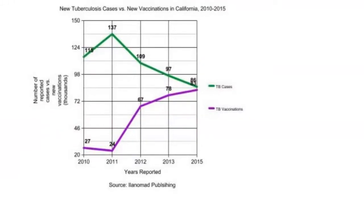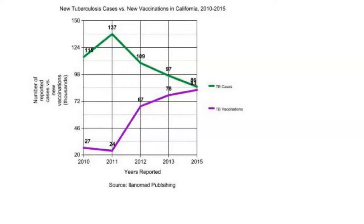One of the things I want to focus on now is just about the chart. Anytime you encounter a chart on the GED science test or any other test, you want to begin to dissect it. You want to see what the title is because that tells you what all the data is about. The title is 'New Tuberculosis Cases versus New Vaccinations in California, 2010–2015.' We know the time period and that it's comparing TB cases versus vaccinations against TB.